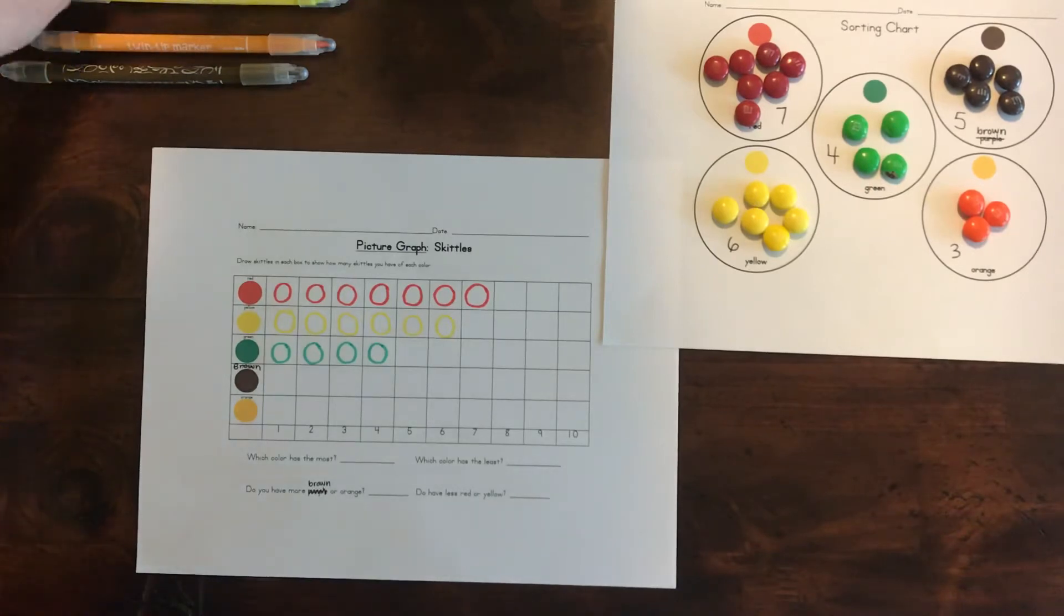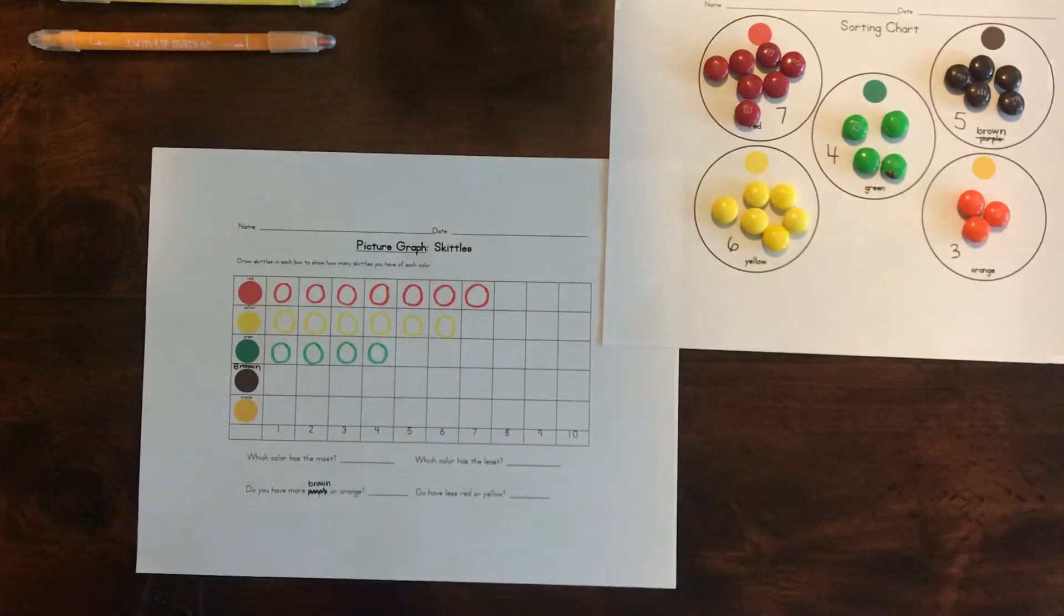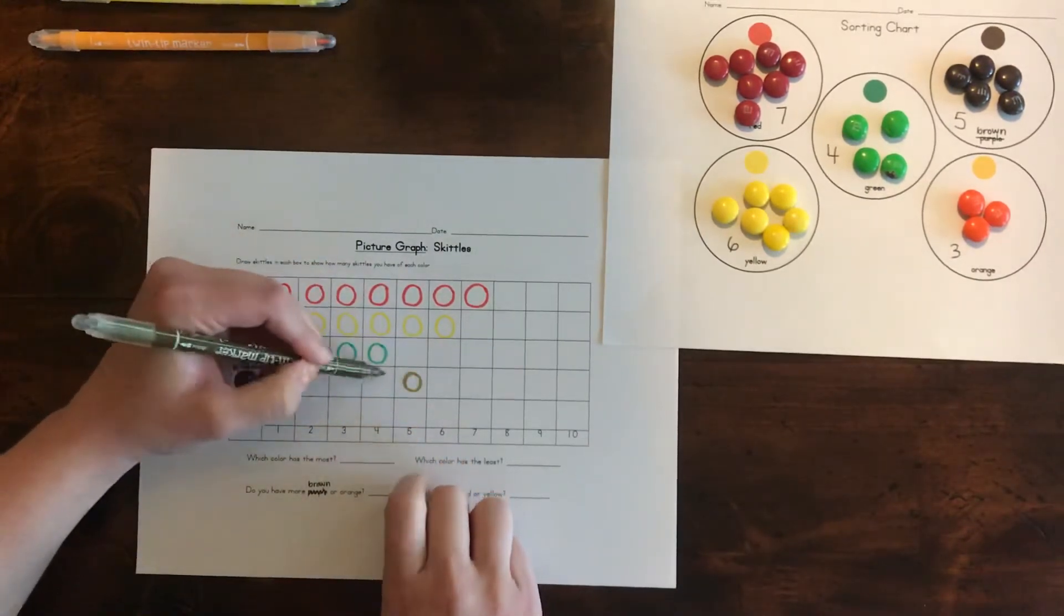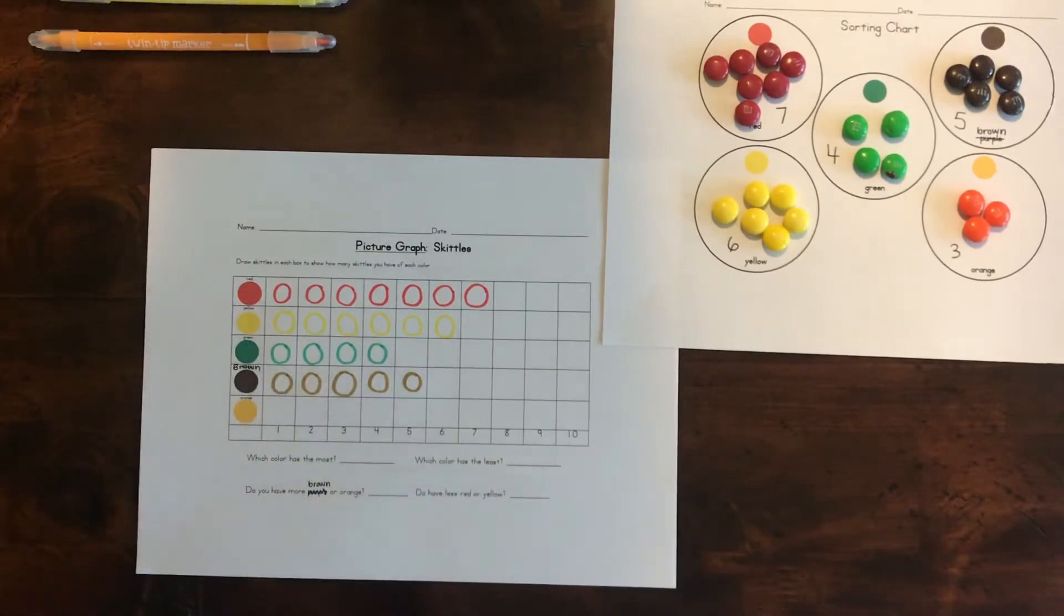The next one is brown. We look over here and we had five brown. So we see five and we draw one, two, three, four, five brown M&Ms.